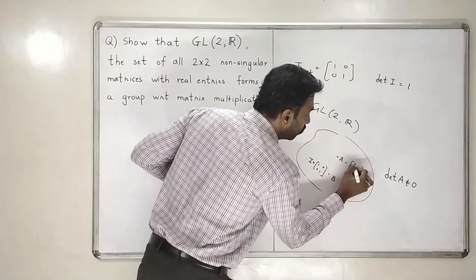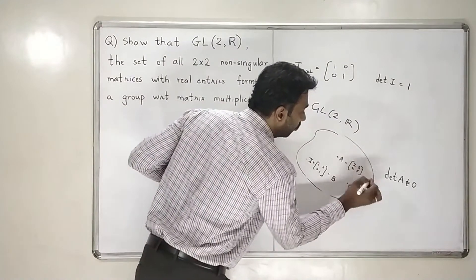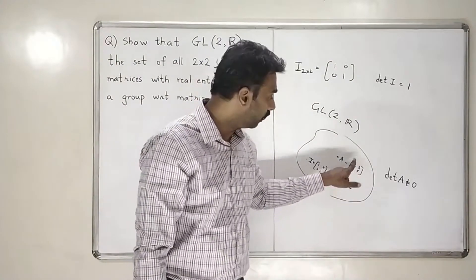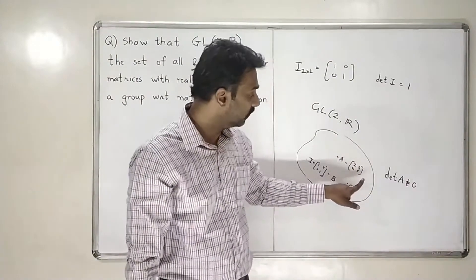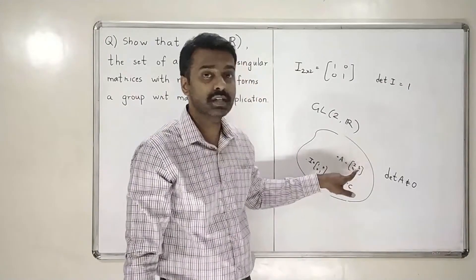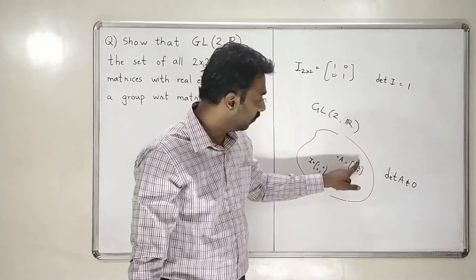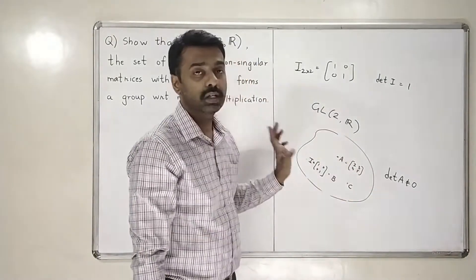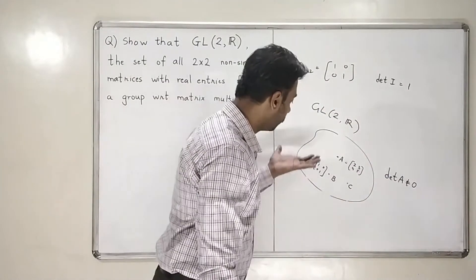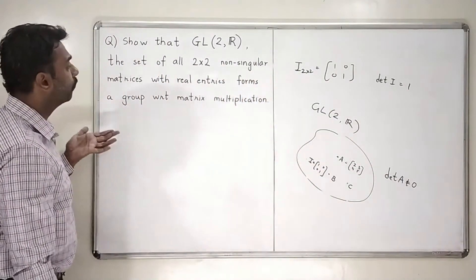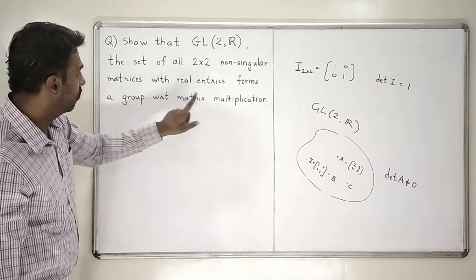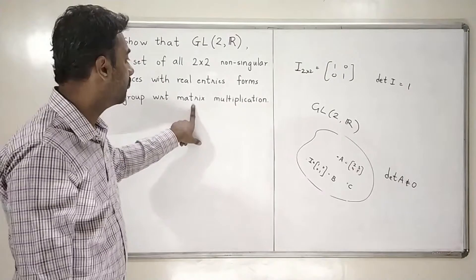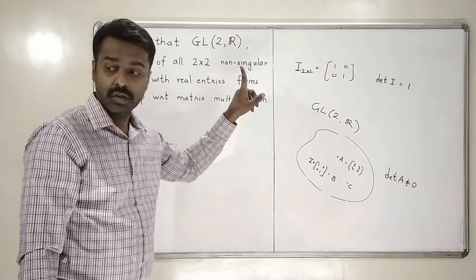Suppose I write a matrix which is [2, 3; 4, 5]. Does this matrix belong to this set? Yes, because all the entries are real numbers. What is the determinant of this matrix? The determinant of this matrix is 10 minus 12, which is minus 2. So the determinant is not equal to 0. So this is a 2x2 matrix which is in GL2R. Now we will collect all such matrices and show that such a set forms a group with respect to the usual matrix multiplication operation.